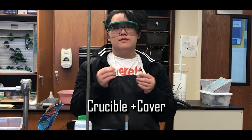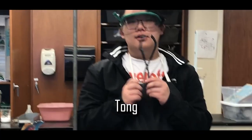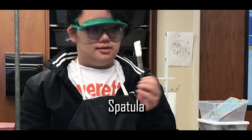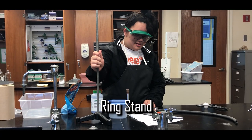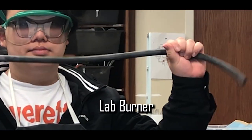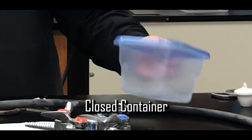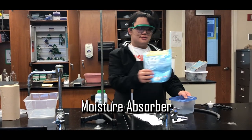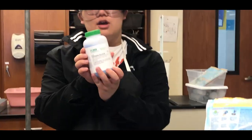The first step is to gather the following materials. The container and the moisture absorber will be used to make a desiccator. The copper-2-sulfate will be dehydrated.